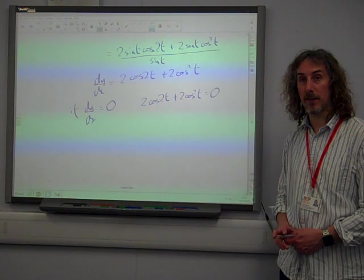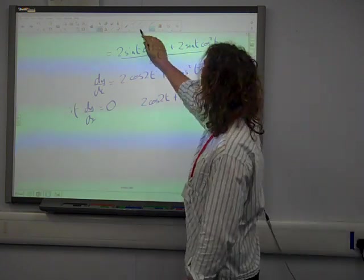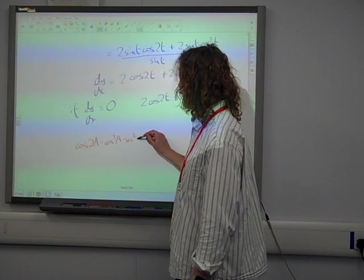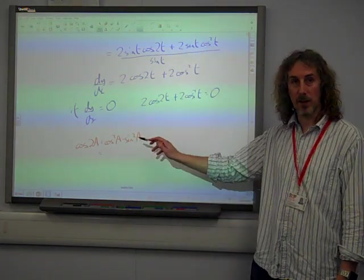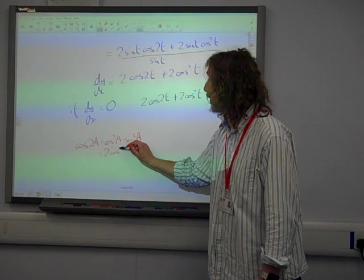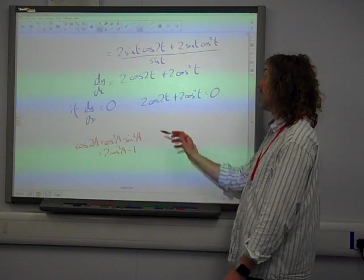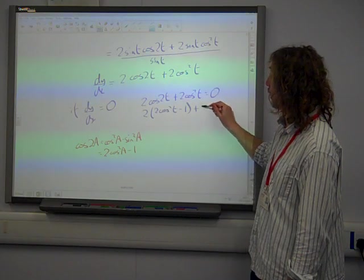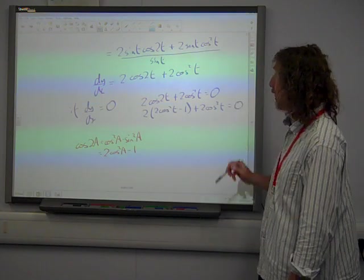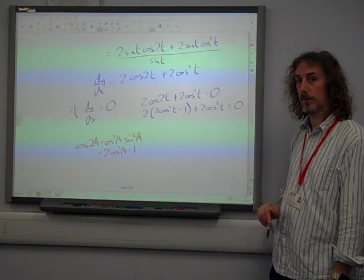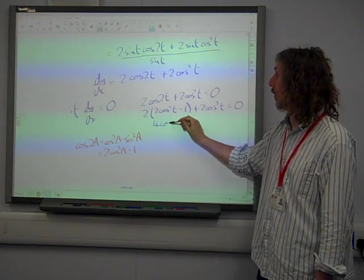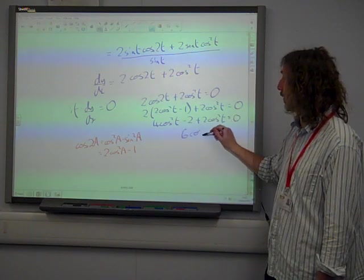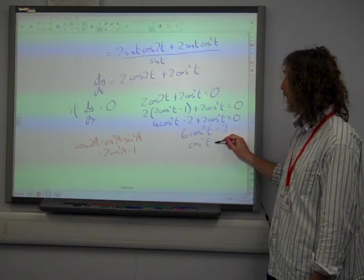We need to get this equation into a form that we can solve it. Well, cos 2t, we've got an identity that links that with cos squared, haven't we? The identity says that cos 2a is cos squared a minus sin squared a. We've already used it in this paper. And that sin squared is 1 minus cos squared. So that's 2 cos squared minus 1. So this becomes 2 times (2 cos squared t minus 1), plus 2 cos squared t is zero, giving us 4 cos squared t minus 2, plus 2 cos squared t is zero. So 6 cos squared t equals 2. Cos squared t is a third.